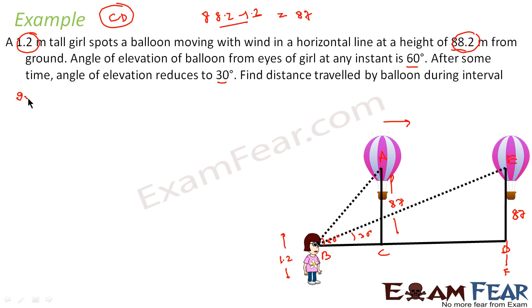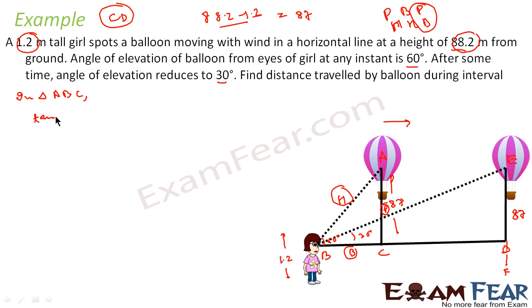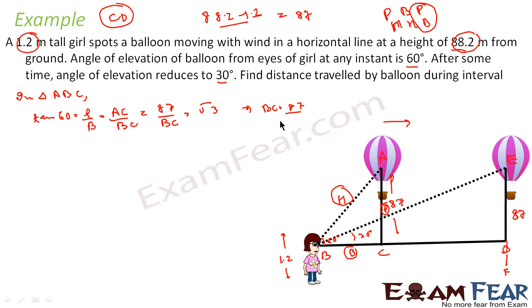In triangle ABC, with B as the frame of reference, AC is the hypotenuse, the vertical side is perpendicular, and BC is the base. I know the perpendicular and want to find the base, so I use tan. Tan 60° = AC / BC, where AC is 87 and BC is unknown. Tan 60 is √3, so BC = 87/√3. Rationalizing by multiplying by √3/√3 gives BC = 87√3/3 = 29√3.